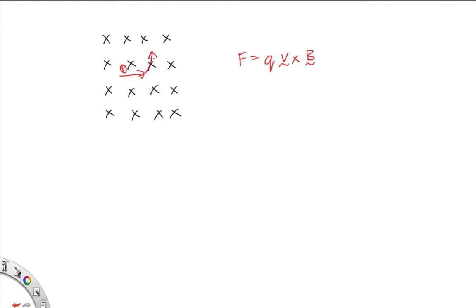So it'll start moving upwards, and once it's moving upwards it will feel a force in that direction — you actually get circular motion. So the answer is: it'll follow a circular path. What if the particle is initially traveling in the same direction as the field lines? If initially the particle is going into the page as well, then F equals 0, so it will keep going in a straight line.